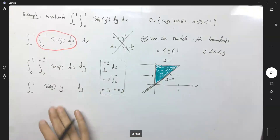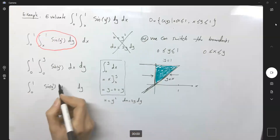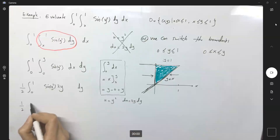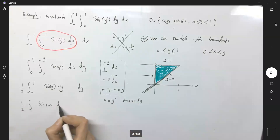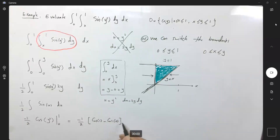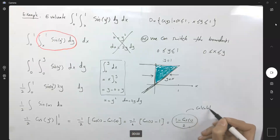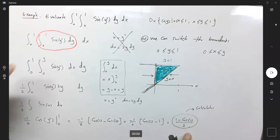Computing this integral is now easy. We use u = y², du = 2y dy, so we get one-half times the integral of sin(u) du, which equals negative one-half cosine(u). Substituting back u = y², evaluated from 0 to 1, we get negative one-half times [cos(1) − cos(0)], which simplifies to negative one-half times (cos(1) − 1), or (1 − cos(1)) / 2. You can use a calculator for an approximation, or leave it as is. This is the value of the double integral.